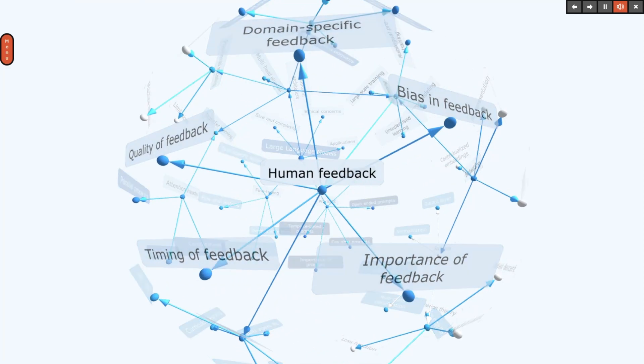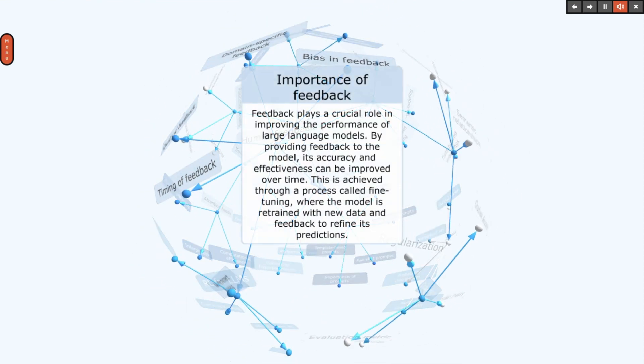Feedback plays a crucial role in improving the performance of large language models. By providing feedback to the model, its accuracy and effectiveness can be improved over time. This is achieved through a process called fine-tuning, where the model is retrained with new data and feedback to refine its predictions.